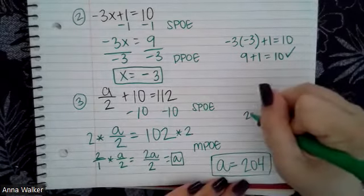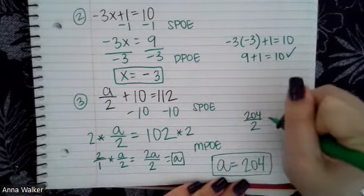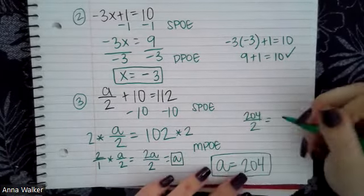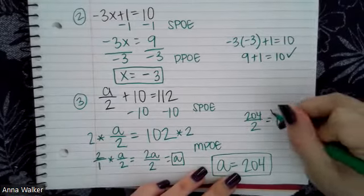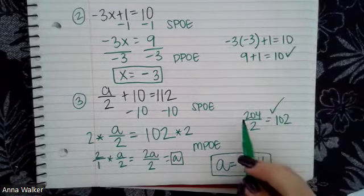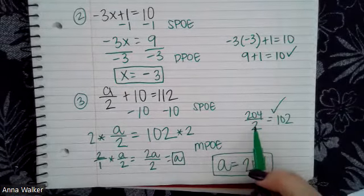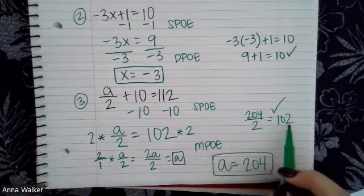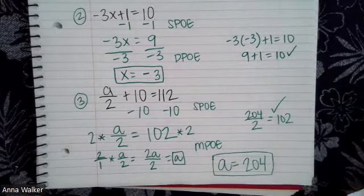If I wanted to check my work: 204 divided by 2 — does that make 102? Two goes into 20 ten times, two goes into 4 two times; combined, that makes 102. Yes, it checks out.